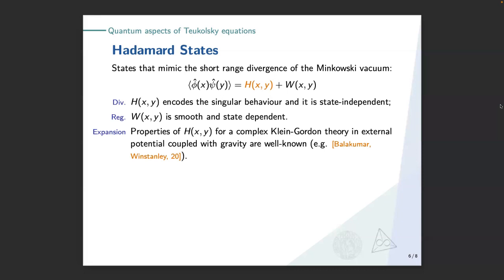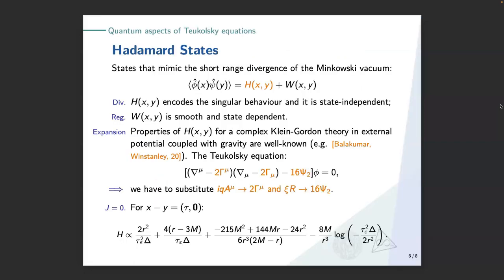It has been shown that we can compute properties of the two-point function for complex Klein-Gordon theory in an external potential — see for example the paper by Balakumar and Ottewill. It is straightforward to recognize that our field equation looks like a non-minimally coupled complex Klein-Gordon theory in an external potential. You only have to apply this dictionary to get the Hadamard parametrix. For example, if you look only at the Schwarzschild case and split the points only in the time direction, you see that the leading part is the same as for a real scalar Klein-Gordon field, while the additional ugly objects come from the external potential and the non-minimal coupling.